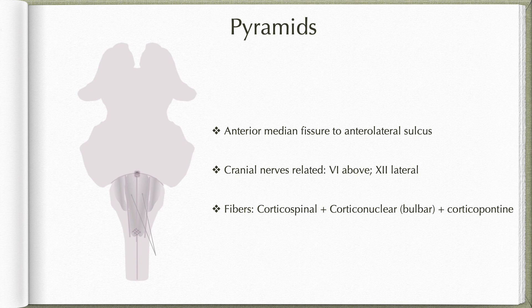Pyramids are compact fiber bundles made up of corticospinal, corticonuclear and corticopontine fibers, of which the corticospinal fibers are the most abundant. Corticospinal fibers descend straight through the medulla. At the lower end of the medulla, the majority of these fibers cross over to the opposite side at the pyramidal decussation and continue as the lateral corticospinal tract.